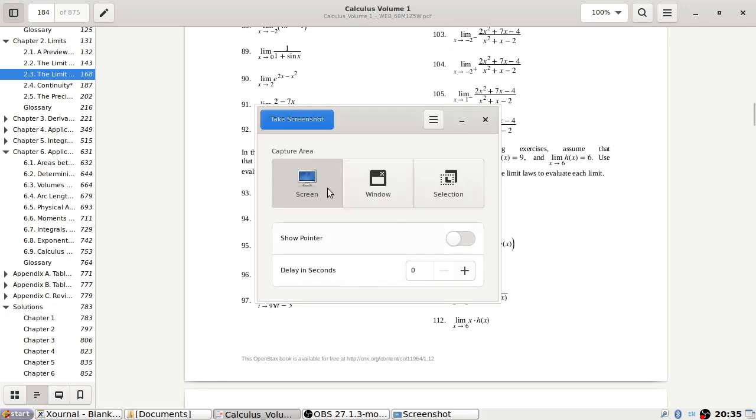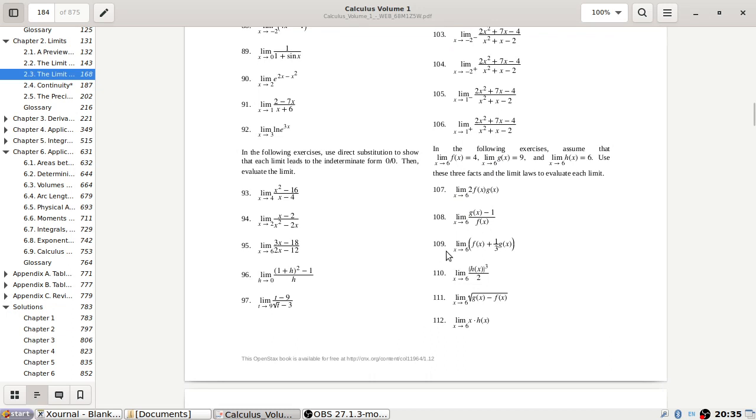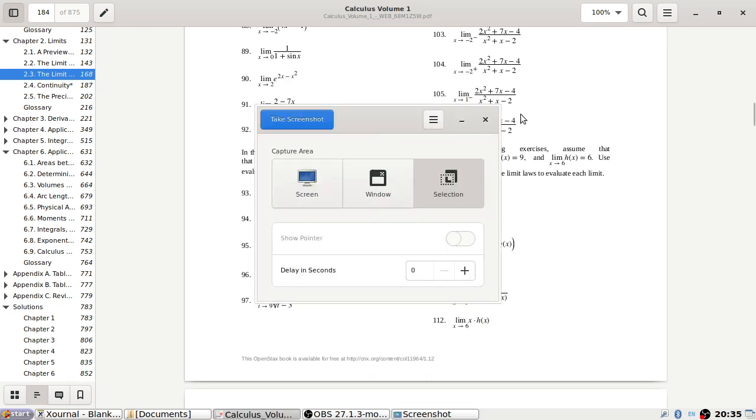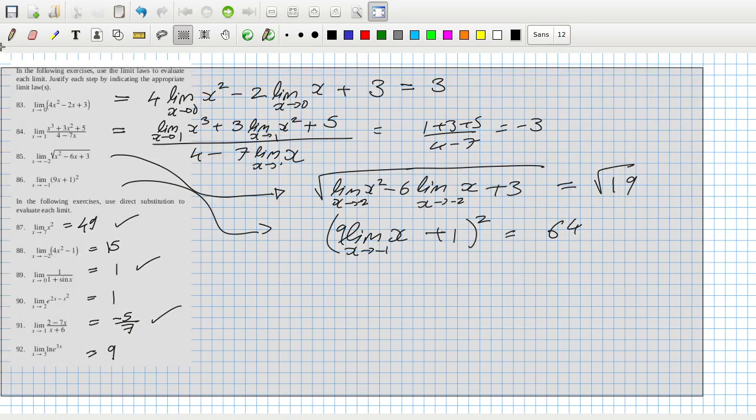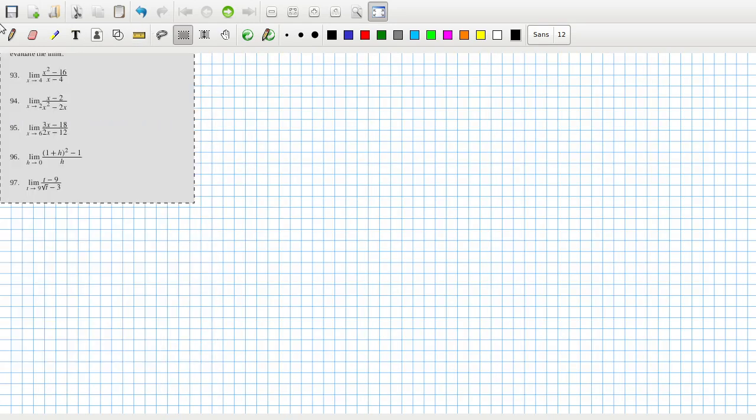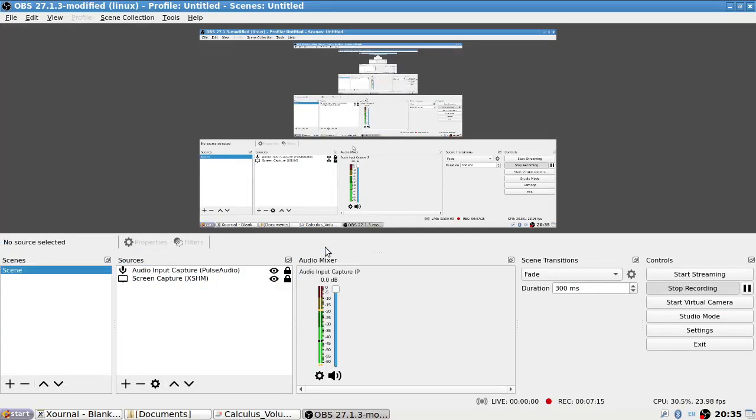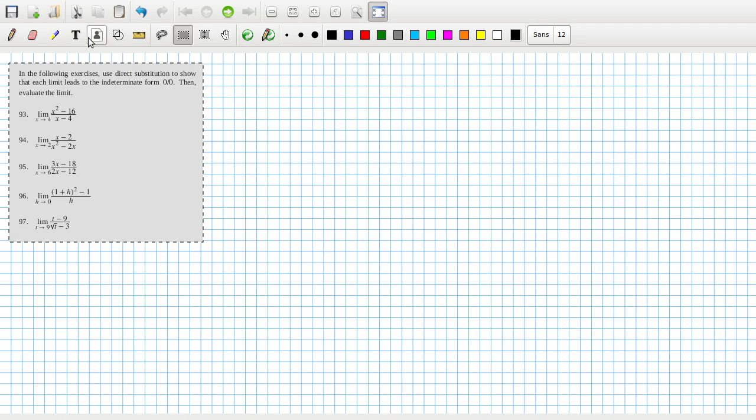Okay, next ones. If you sub 0 in, let's see. If you sub 4 in, that's going to be 0 over 0. Yeah. You sub 2 in, that's 0 over 0. Yep. You sub 6 in, 18 minus 18 over 12 minus 12, yep. 1 minus 1 over 0 over 0. And 9 minus 9 is 0 and 3 minus 3 is 0, so yeah. You can pad it out but they all check out. Indeterminate.